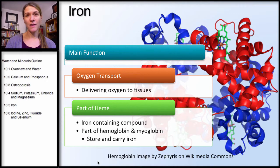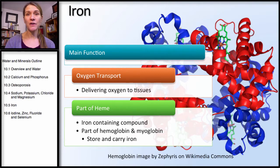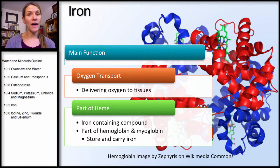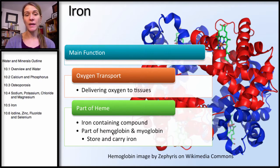We're going to be starting with iron. I think this is a well-known mineral, especially in its importance. The main function of iron is oxygen transport — delivering oxygen to the tissues. It does this by being part of what's called heme. Heme is part of both hemoglobin, which is in our red blood cells, and myoglobin, which is in our muscle.